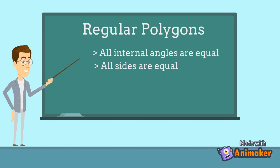Examples of regular polygons are square, equilateral triangle, and hexagon.